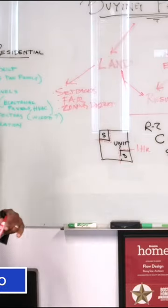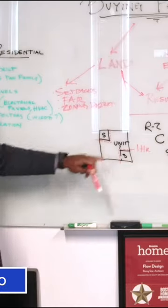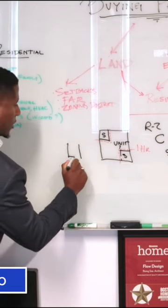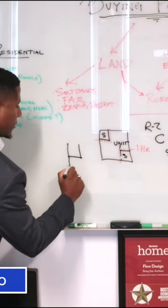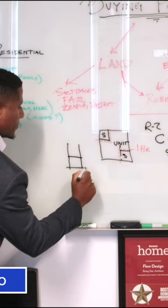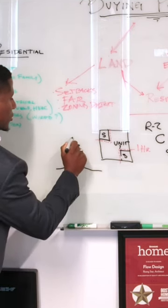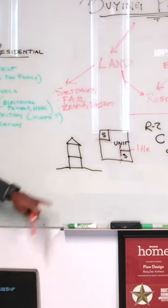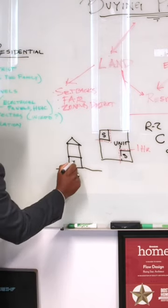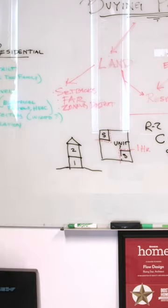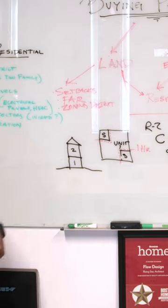If you build a second floor to this unit one — if I do a little section — let's say this is your ground and this is your little house. Let's say unit one is on the first floor and unit two is on the second floor. You're trying to renovate this existing house. It's only one level, but you wanted to do one addition.